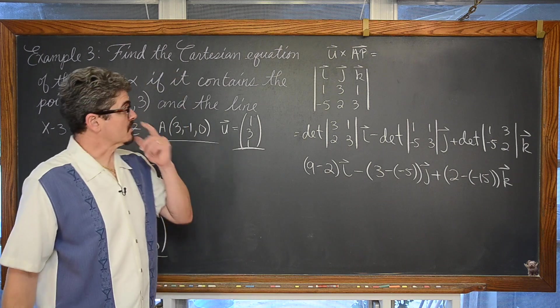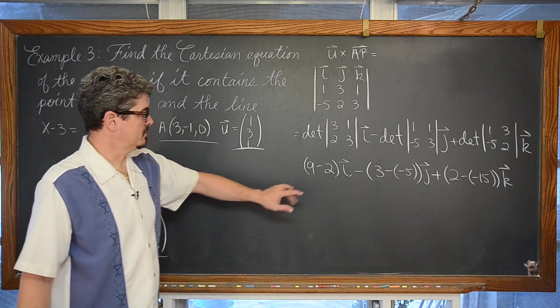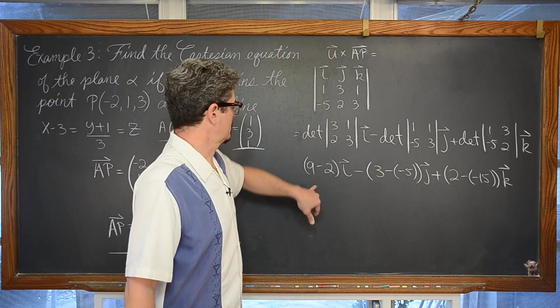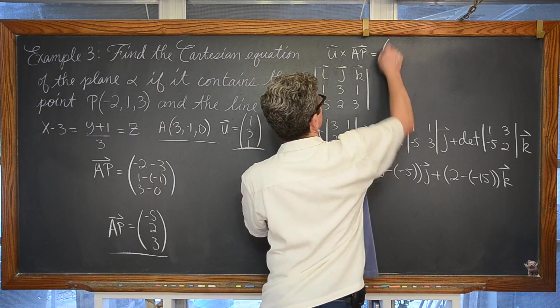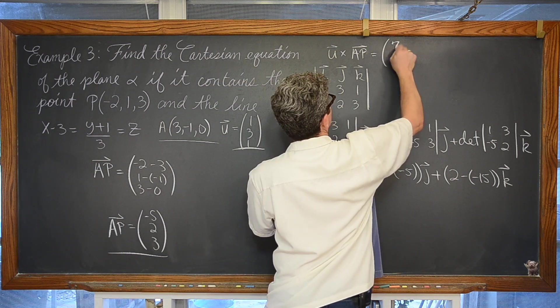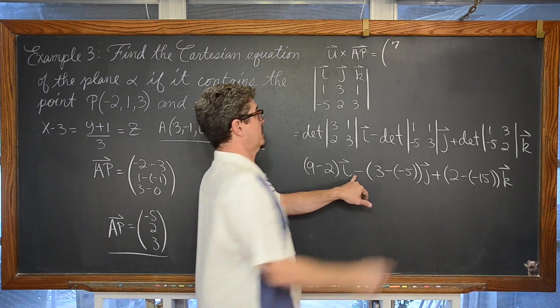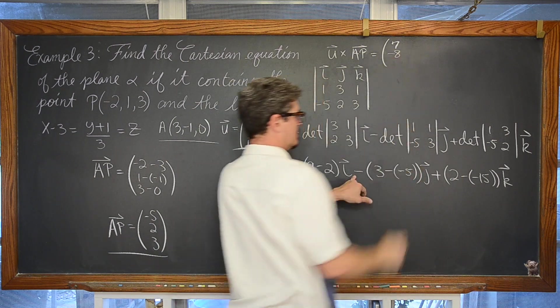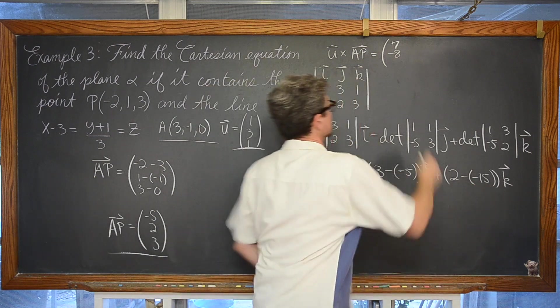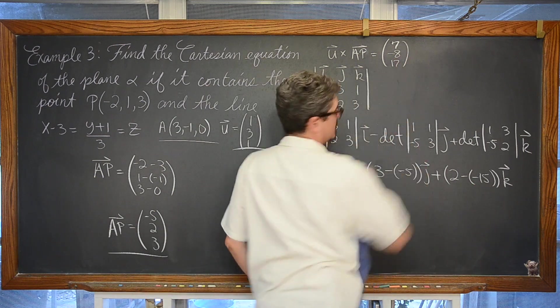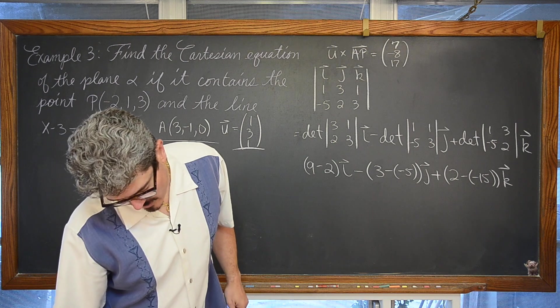That is going to give us a cross product which is equal to, I'm going to write this in column component form, 9 minus 2 is 7. We have 3 plus 5 which is 8 but it has a negative out here, so negative 8 and 2 plus 15 is 17. Double check one more time just so we are good for the camera.